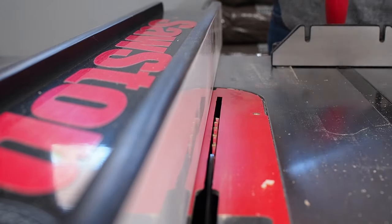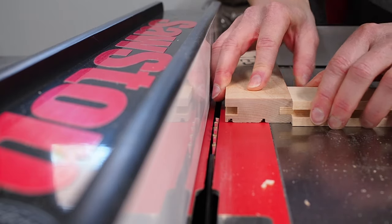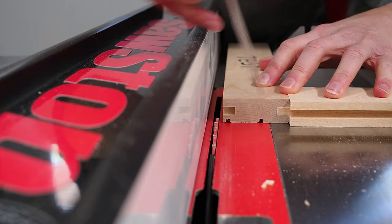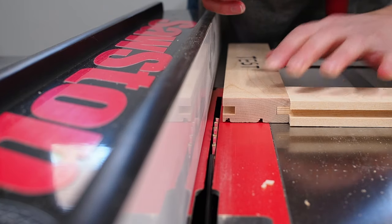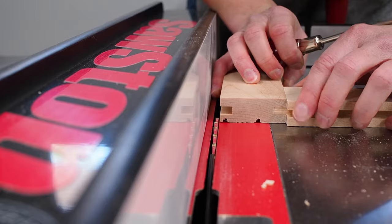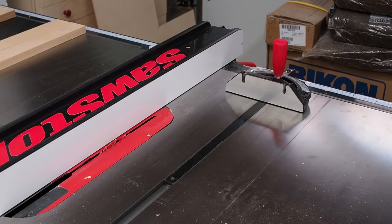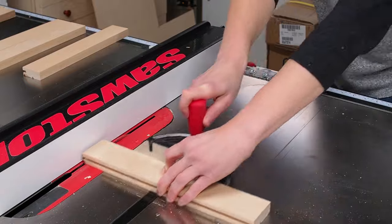With the tenon cut, I can do a test fit and I'm really happy with the fit. My tongue is the same depth as the groove, with the shoulder bottoming out perfectly. And I've got a nice friction fit, neither too loose nor too tight. Alright, so with my test piece perfectly dialed in, I can grab my two rails and cut the tongues without touching any of the settings.